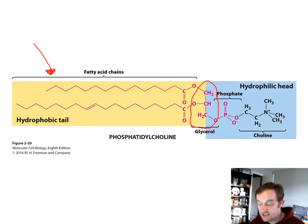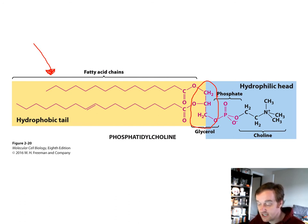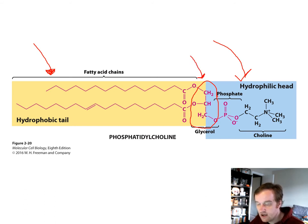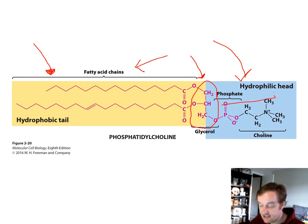These bonds are formed through an esterification reaction of two hydroxyl groups to two fatty acids and to a hydrophilic head group — the choline in this example. The carbon-carbon bond rotation in the backbone is responsible for orienting the hydrophobic tails in one direction and the hydrophilic heads in the other direction, making this molecule polar on one side and nonpolar or hydrophobic on the other.